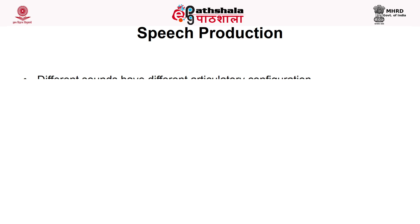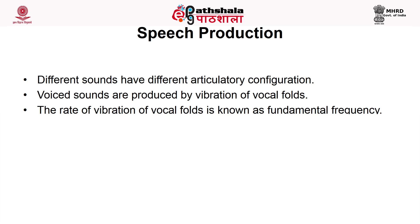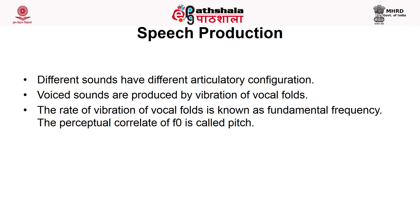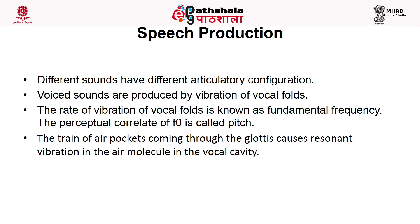How does the speech production system of human beings work to produce different kinds of sounds through which we exchange our ideas? Different sounds are produced using different types of articulatory configurations. We will look at pictures to see what articulatory configuration is required to produce different kinds of sounds. In particular, we will look at voiced sounds, which are produced by the vibration of vocal cords or vocal folds.